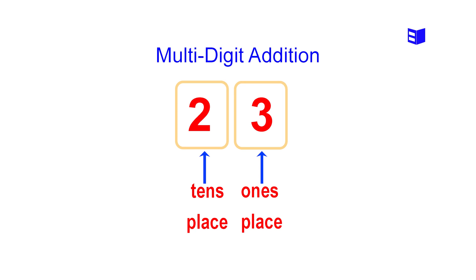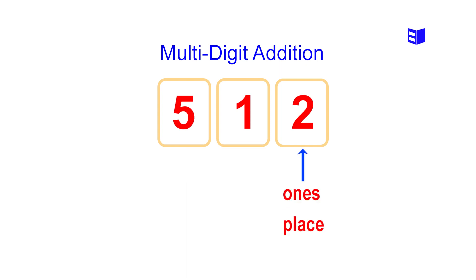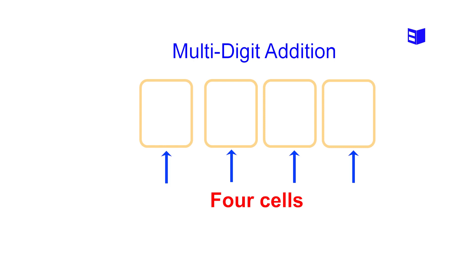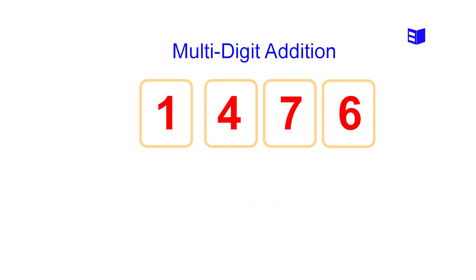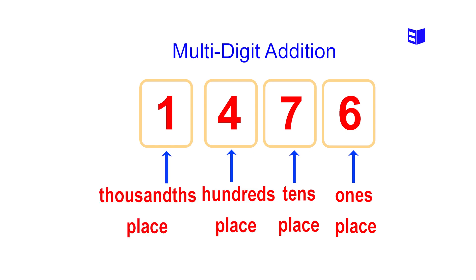is in the tens place. For three-digit numbers we take three cells — for example 512, in which the number 2 is in the ones place, the number 1 is in the tens place, and the number 5 is in the hundreds place. For four-digit numbers we use four cells — for example 1476, where 6 is in the ones place, 7 is in the tens place, 4 is in the hundreds place, and 1 is in the thousands place.